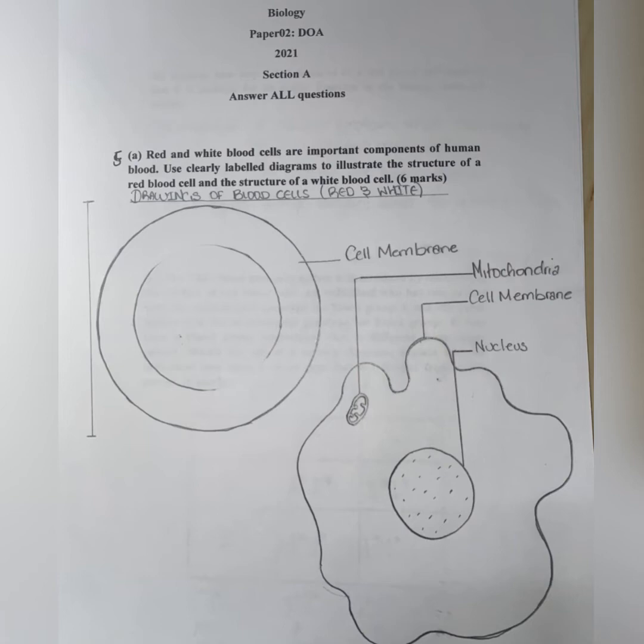Specifically question 5. And the first part says, red and white blood cells are important components of human blood. Use clearly labeled diagrams to illustrate the structure of a red blood cell and the structure of a white blood cell. And this is worth six marks.